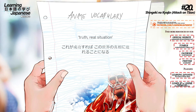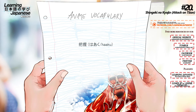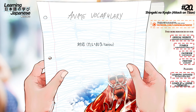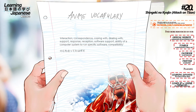Truth, real situation. 把握 (haaku) — Grasp, catch, understanding. 対応 (taiou) — Interaction, correspondence, coping with, dealing with, support, response, reception. Software support — ability of a computer system to run specific software, compatibility.